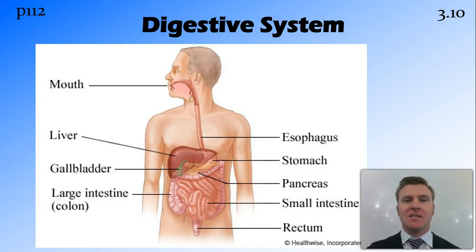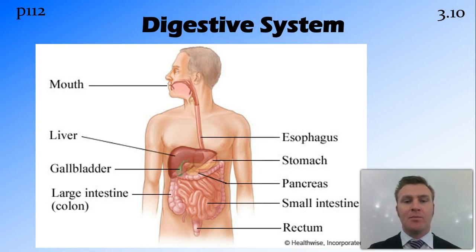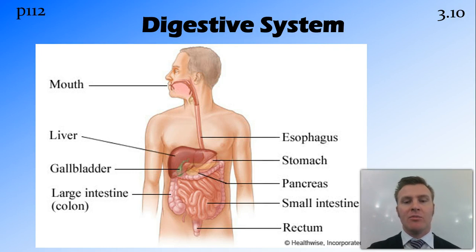The digestive system consists of the alimentary canal, starting with the mouth. We've already looked at the mouth and how teeth increase the surface area of the food. Food then travels down the esophagus into the stomach, from the stomach into the small intestine where juices are added from the liver and pancreas. We then move into the large intestine, and finally the waste products are stored in the rectum and then excreted.